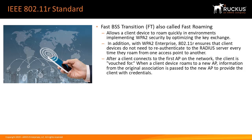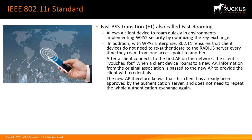When a client device roams to a new AP, information from the original association is passed to the new AP to provide the client with credentials. The new AP therefore knows that this client has already been approved by the authentication server and does not need to repeat the whole authentication exchange again.